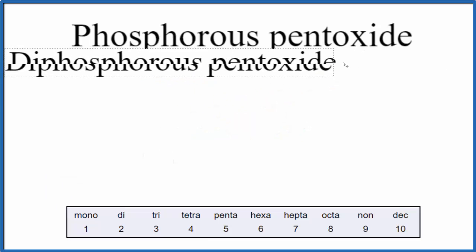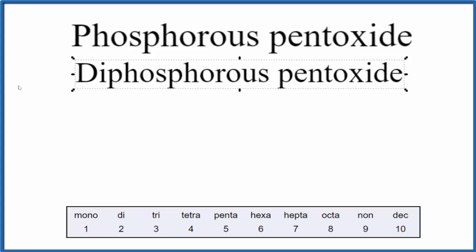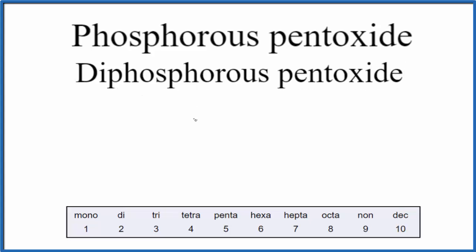You'll also see this called diphosphorous pentoxide. So again, we have our phosphorus, but now di, that means 2. So P2, and then we have our pentoxide, O5. This is a little bit better. It looks a little more reasonable to me.